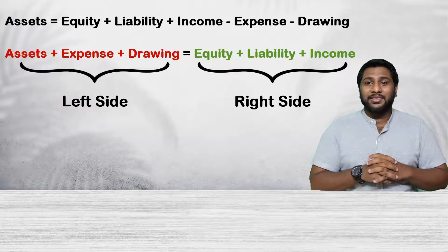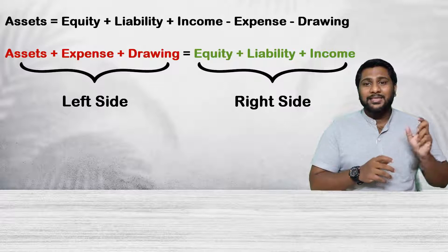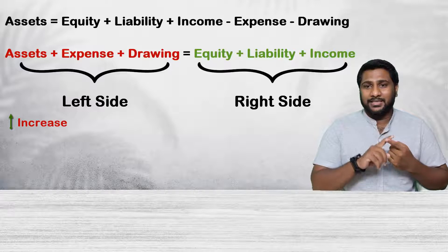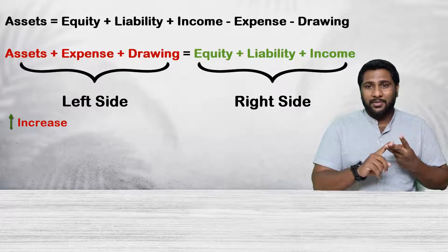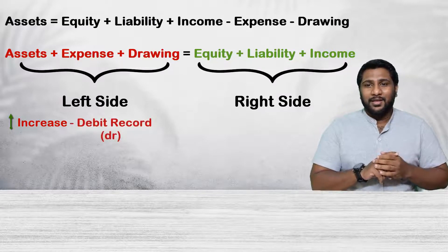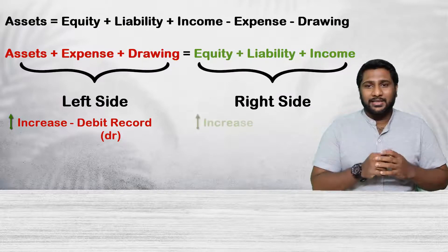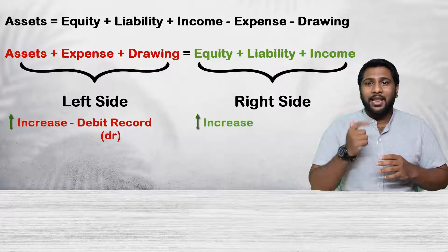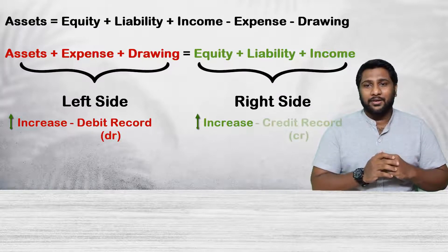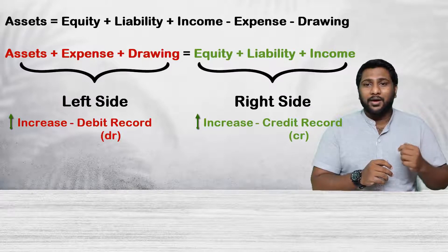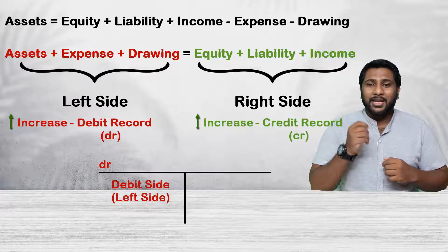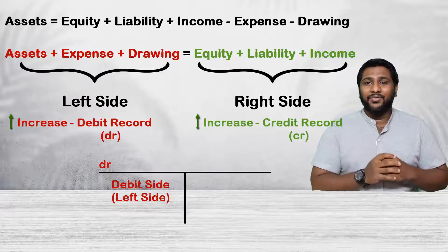So what's the easy method to remember this double entry rule? Very simple. If any element on the left side of the equation increases — that means assets, expenses, or drawings — we will record it as a debit record. On the right side, if any element increases — that means equity, liability, or income — we will record it as a credit record. Debit records are recorded in the debit side of the T-accounts or ledger accounts, and credit records in the credit side.